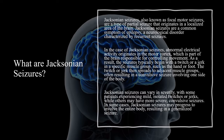As a result, the seizures typically begin with a twitch or a jerk in a specific muscle group, such as the hand or foot. The twitch or jerk then spreads to adjacent muscle groups, often resulting in a convulsive seizure involving one side of the body. Jacksonian seizures can vary in severity, with some patients experiencing mild, isolated twitches or jerks, while others may have more severe convulsive seizures. In some cases, Jacksonian seizures may progress to involve the entire body, resulting in a generalized seizure.